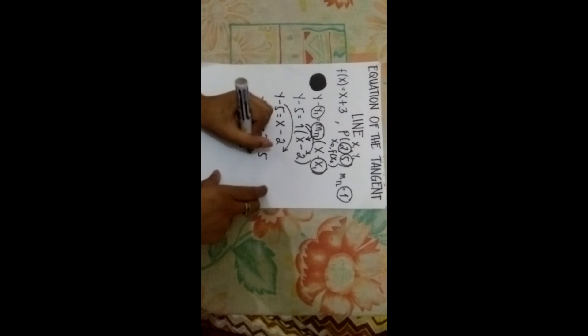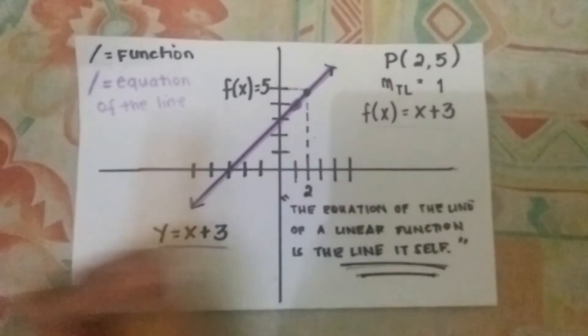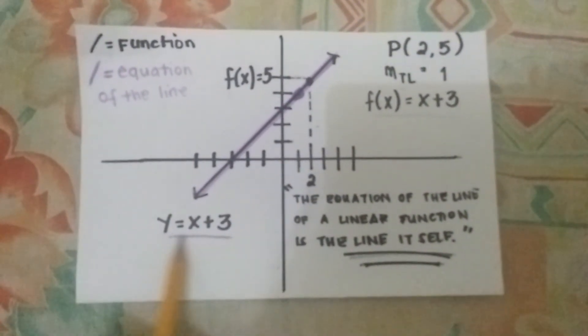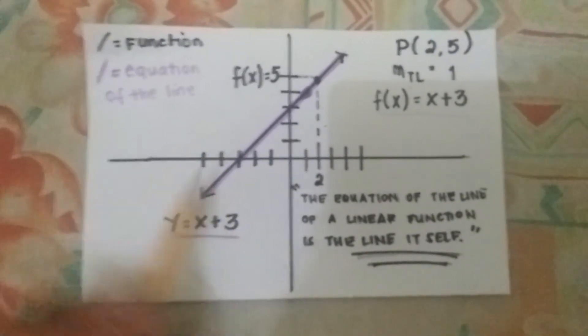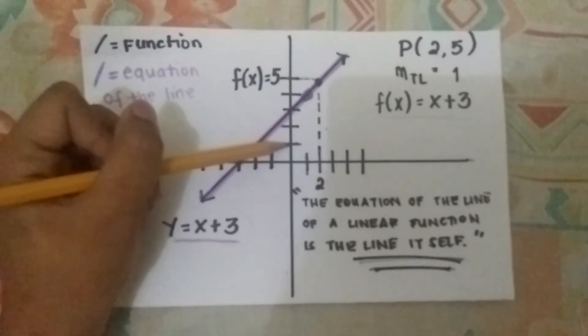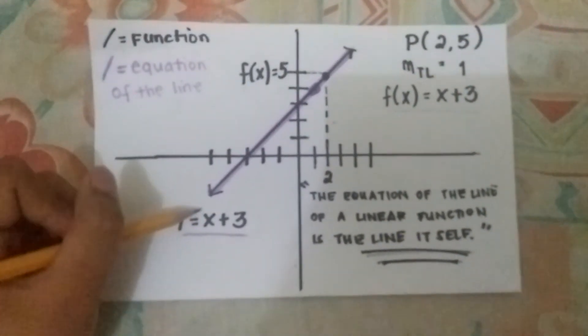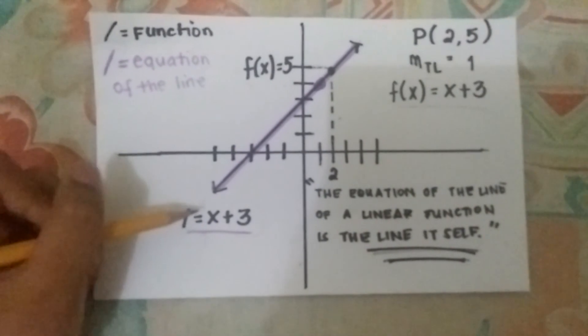So the equation of the tangent line is y equals x plus 3. For the graphical representation of the function f(x) equals x plus 3: the equation of the tangent line we got was y equals x plus 3. From our introduction, 3 serves as the y-intercept. But this is not the end — there is still the invisible slope, 1 over 1, which represents the rise over run.